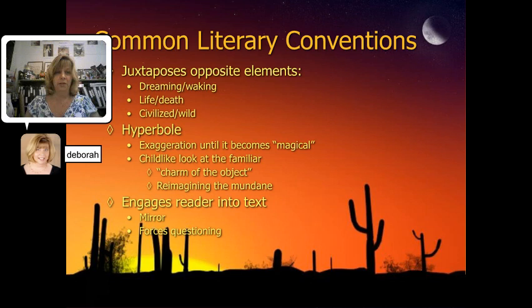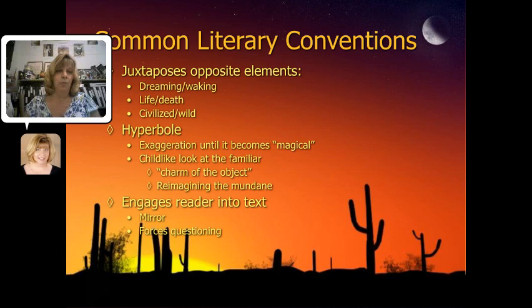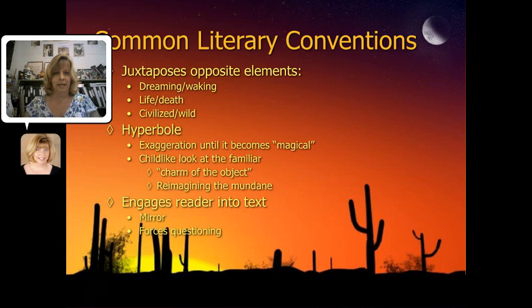In a typical example of magical realism, you'll see juxtaposition of opposite elements: is a character dreaming or awake, is it a story about life or death, the conflict between what's civilized and what's wild. You'll also see hyperbole — ordinary things exaggerated to the point where they become magical, like a drowned man who washes up on a beach and just happens to be a giant, a Jack and the Beanstalk type giant, and no one seems particularly surprised. Characters often have a childlike look at the familiar world, getting very interested in ordinary mundane objects, which engages the reader and forces us to question what we really believe is real or not.